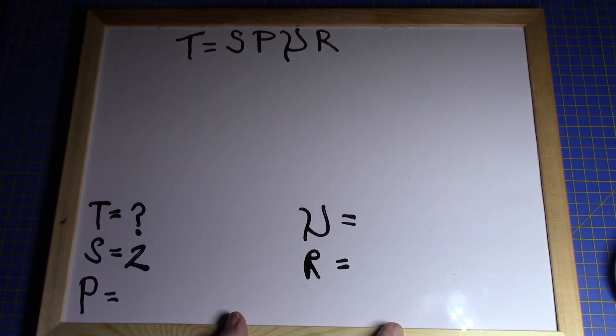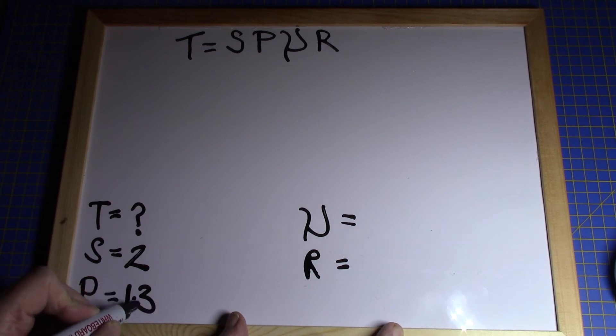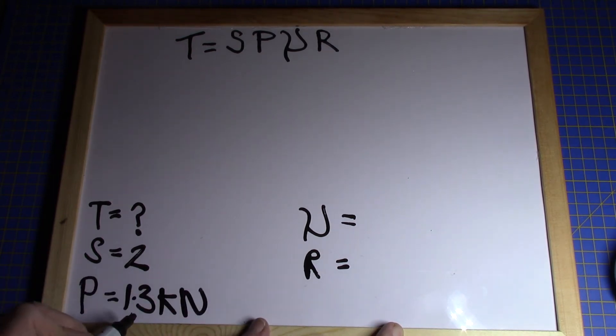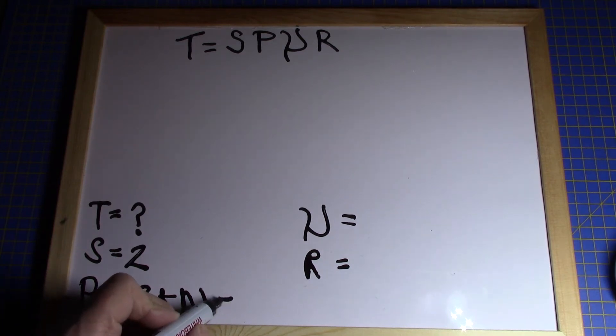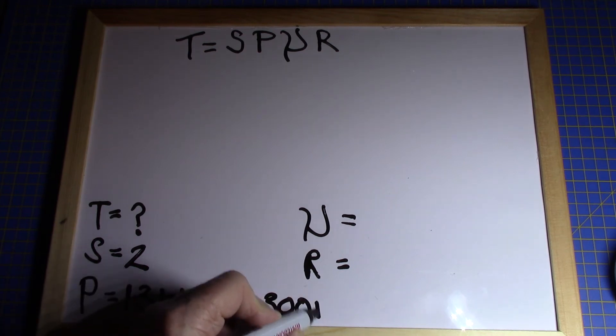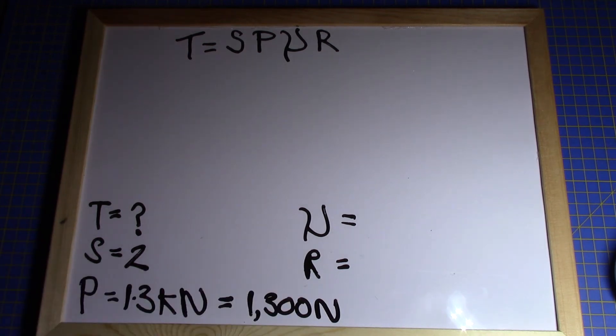With a clamping force of 1.3 kilonewtons, so that's 1.3 kN. Now we know we can't use 1.3 kilonewtons because the base derived unit for force is the newton, not kilonewtons, so that becomes 1300 newtons.